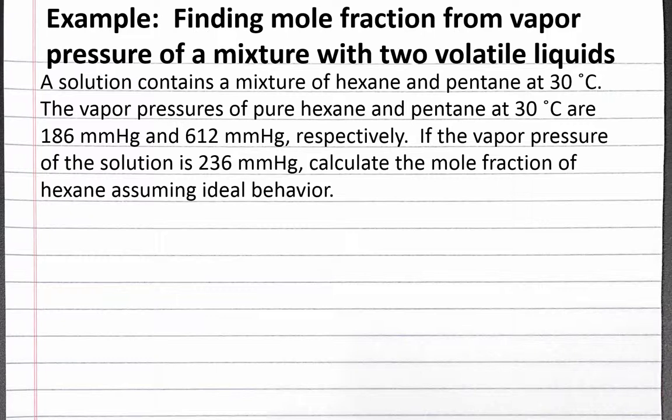Let's start by collecting the information we're given and relating it to the equations that govern vapor pressure. We're told the vapor pressure of the solution is 236 mmHg. The solution is composed of two volatile liquids, so the vapor pressure of the solution equals the sum of the vapor pressures from hexane and pentane.